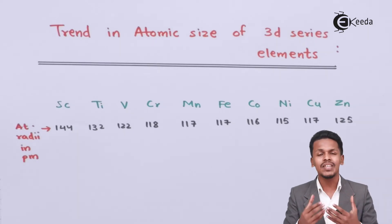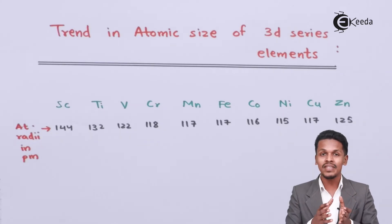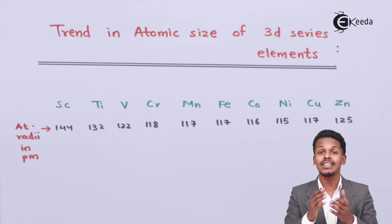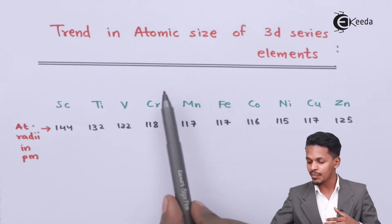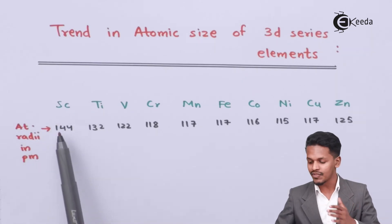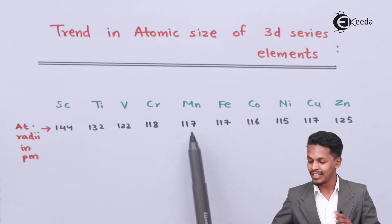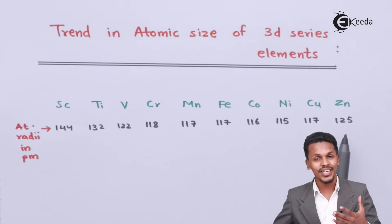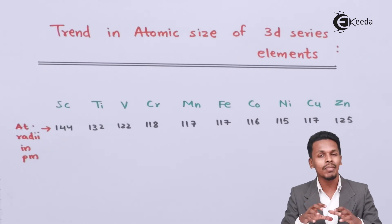Across the period, as atomic number increases, there is an increase in nuclear charge — the tendency of the nucleus to attract the outermost electron. Since the extra electron is entering the inner 3d shell, the screening effect and the nuclear charge oppose each other. This opposing nature is observed from the middle zone — from manganese to zinc — where atomic size decreases from 144 to 132 to 122 to 118, then becomes almost steady, and finally increases to 125 pm for zinc because the screening effect becomes greater than the nuclear charge.